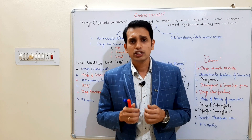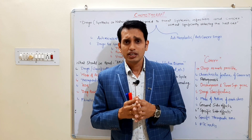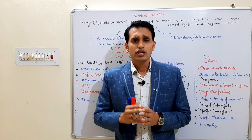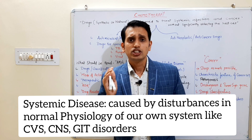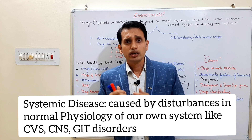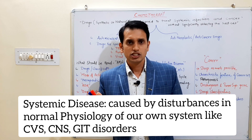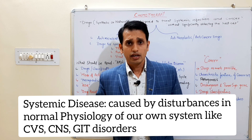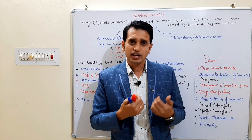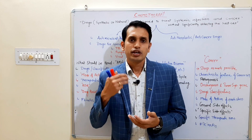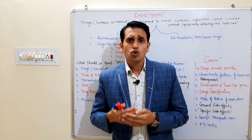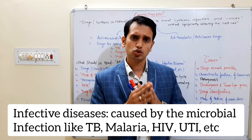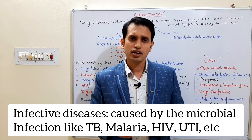Let's talk about some important points about disease. What is disease? Basically, disturbance in the physiology is a disease. In my opinion, disease can be categorized into two categories. First is the systemic disease — those diseases which are caused by disturbance in our normal physiology of our organs, like cardiovascular disorders or hypertension. Second is infective disease, caused by pathogens like bacteria, fungal, viral, protozoa, etc.